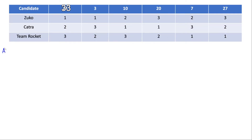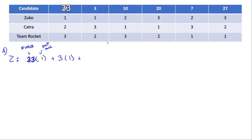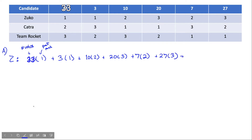So first we'll do part A using Borda's method. This works exactly the same way as before — we take our percentage of voters and multiply by their preference rankings. For the first candidate, we have 23 times a preference ranking of 1, plus 3 times 1, plus 10 times 2, plus 20 times 3, plus 7 times 2, plus 27 times 3. If we simplify all of this, it ends up adding up to 201.